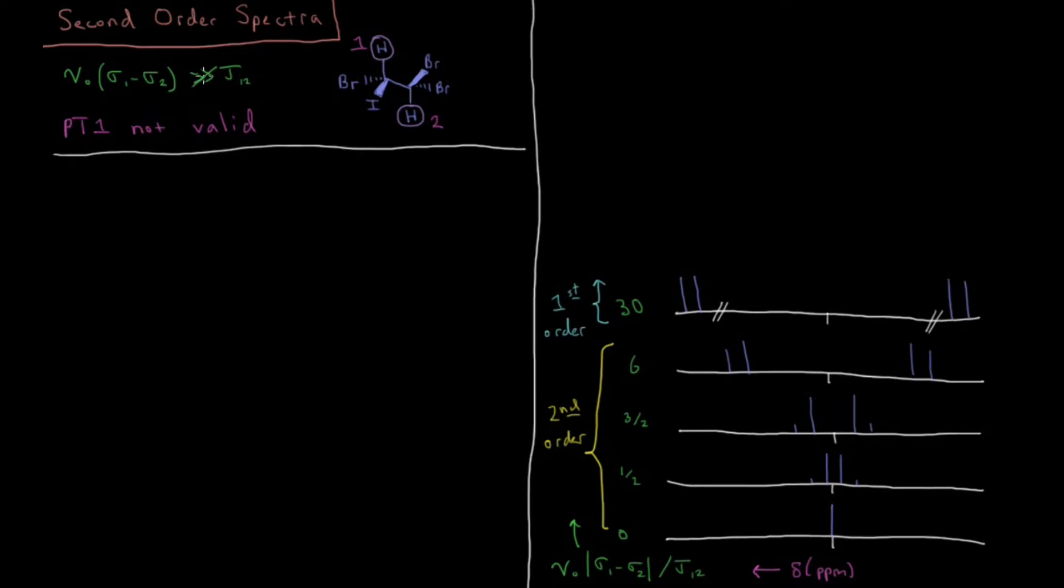So that would be something which satisfies this criterion that this distance in between here, nu0 times sigma-1 minus sigma-2, is much, much greater than j12, which is the difference between these two peaks here, the coupling constant. And when it does meet that, that was called a first-order spectrum, and when it doesn't meet it, it's going to be called a second-order spectrum, which we're going to look at now.